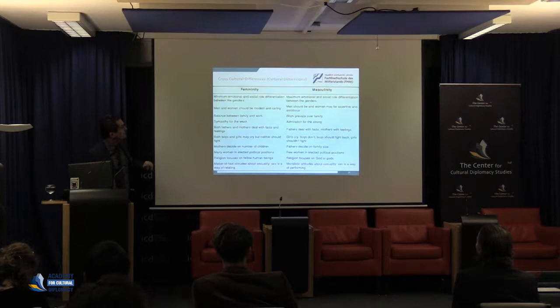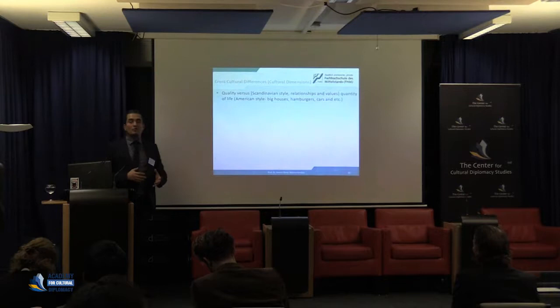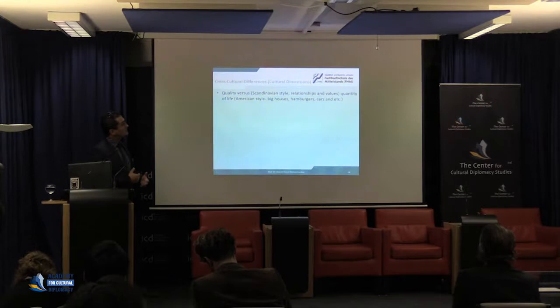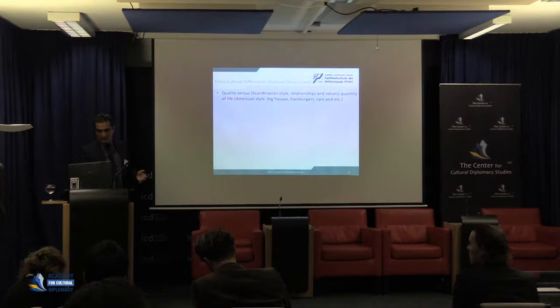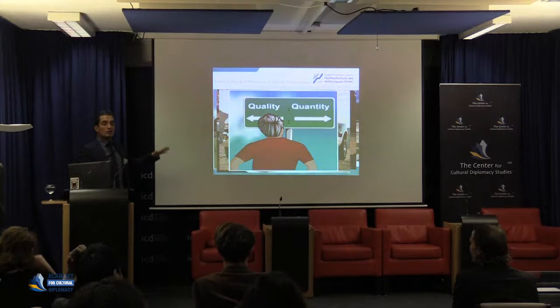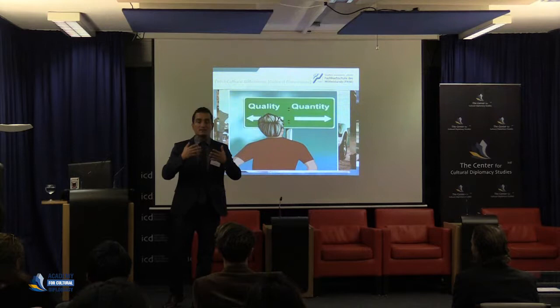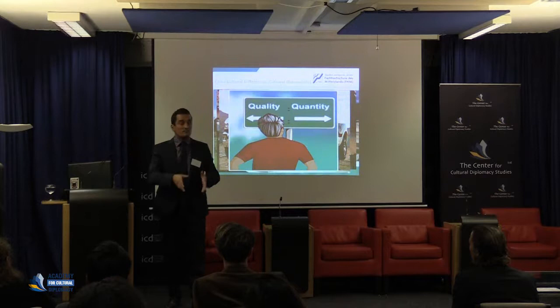Here is about quality versus quantity of life. When we talk about quality in culture we can think about the Scandinavian style, and when we talk about quantity we can think about the American style — big food, big hamburger, big car, big house. The question is quality or quantity, and of course we need both, but in what proportion depends on the culture. In one culture it might be 20% quantity and 70% quality; in another culture 50/50.